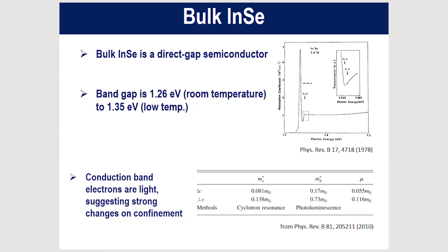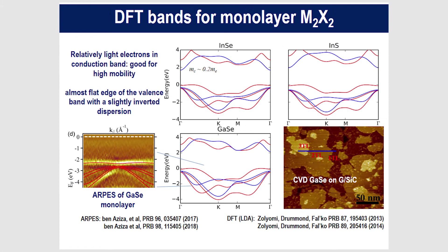Despite being easily mechanically exfoliated or grown in one, two, or three layers, you still have quite a strong dispersion of electron energy for electrons moving out-of-plane. This suggests that going to a monolayer or few layers will produce quite strong changes in properties. The holes in-plane are comparatively quite heavy. The DFT bands confirm light electron effective masses and quite heavy, almost flat valence bands, with the gap slightly indirect — confirmed by ARPES on CVD-grown gallium selenide.